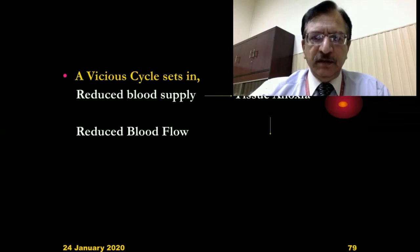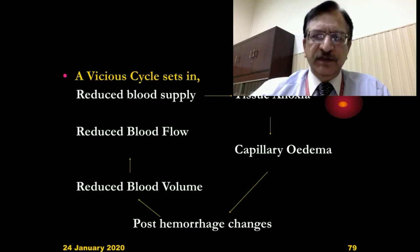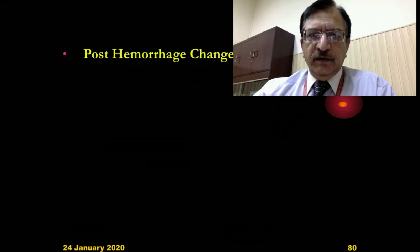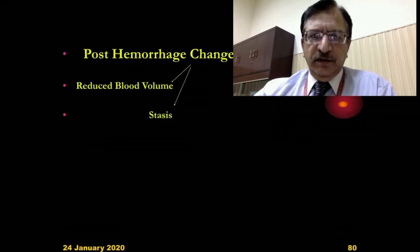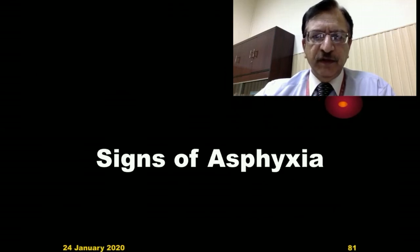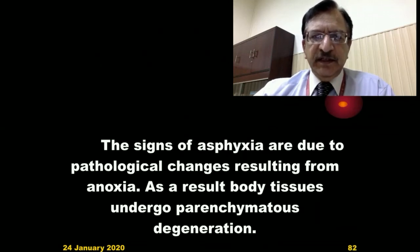There is a vicious cycle — this is the diagrammatic representation of the vicious cycle of hypoxia. Initially there is anoxia or hypoxia which leads to capillary edema and petechial hemorrhages, which further reduce the volume of blood. There is reduced blood supply, stasis, edema, congestion, and petechial hemorrhages. These signs of asphyxia are due to pathological changes resulting from anoxia, and as a result, body tissues undergo parenchymatous degeneration.